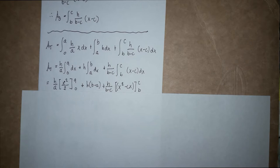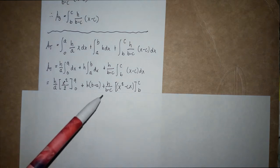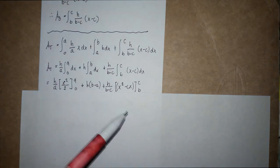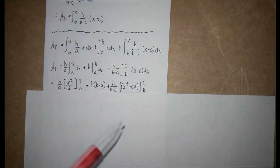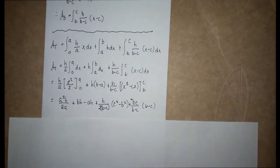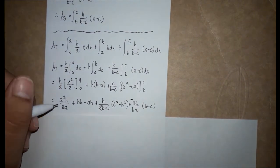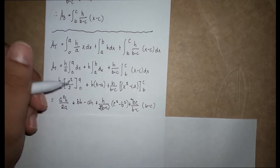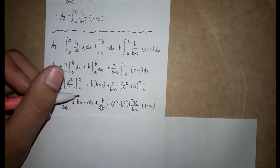Evaluating each integral: we get h/a times x squared over two from zero to a, plus h(b minus a), plus h over (b minus c) times (x squared over 2 minus cx) from b to c. This gives a squared h over 2a — the a's cancel — plus bh minus ah.